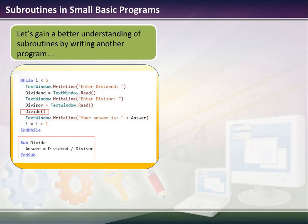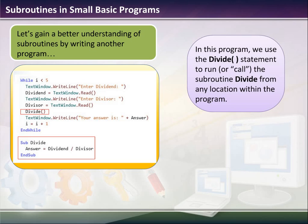So let's try to understand this in a bigger context. Here we have a program, and we want to use the divide statement to run or call the subroutine divide from any location within the program. Down here in this box, I've defined my subroutine as divide. What does that do? It takes the variable answer and sets it equal to the dividend divided by the divisor. Well, we don't know what that is, so we've got to look at the program itself. It says enter a dividend, and we would enter in the dividend. Then it says enter a divisor, then we would enter in the divisor.